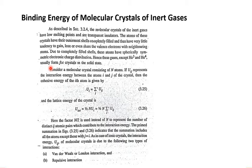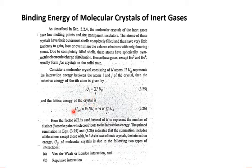The main focus today is the discussion of binding energy or cohesive forces in the molecular crystals formed by inert gases. Consider a molecular crystal consisting of N atoms. If U_IJ represents the interaction energy between atoms I and J of the crystal, then the cohesive energy of the I-th atom is given by U_I = Σ'_J U_IJ, and the total lattice energy of the crystal is U_total = (1/2) N U_I.